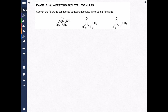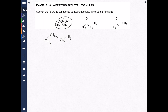So let's take this first example here and quickly redraw it so we have something to work with. This is a condensed structural formula, more or less. It has a little bit of detail, but not a lot, and we want to convert it to the skeletal formula.